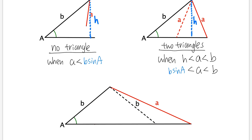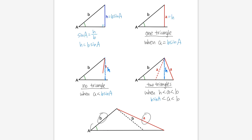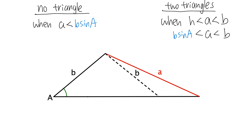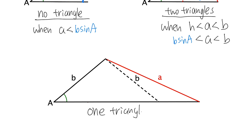If a is greater than or equal to b, only one triangle is possible. In this case, the height no longer limits the construction and only one configuration exists.